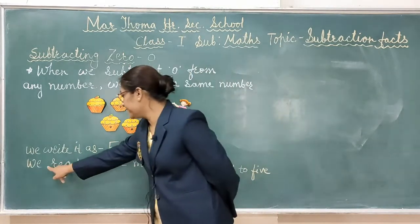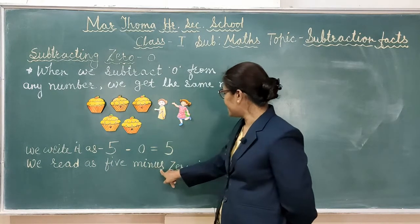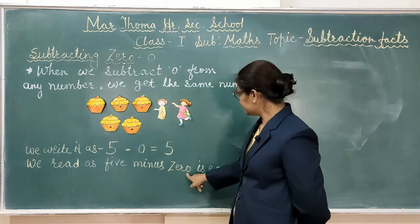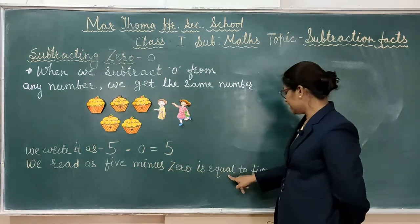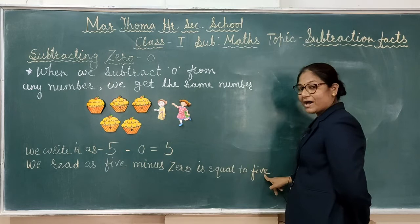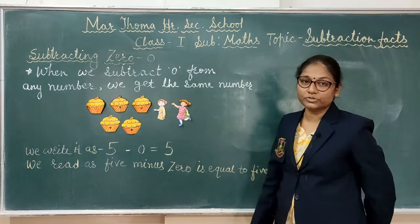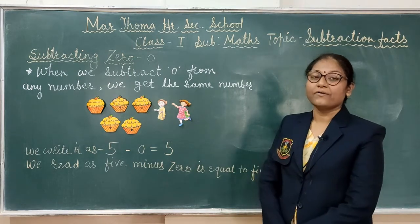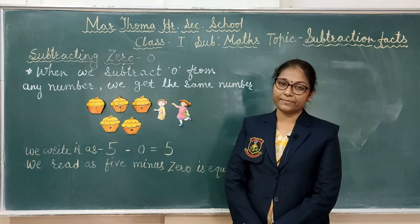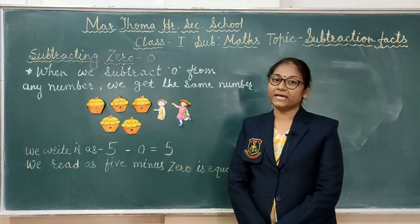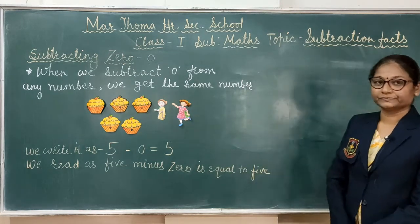And we read it as: 5 minus 0 is equal to 5. So students, I hope you understand — when we subtract 0 from any number, we get the same number. Thank you.